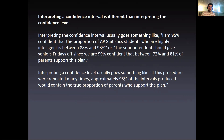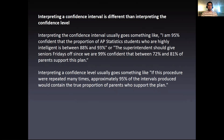Interpreting a confidence interval is different from interpreting the confidence level. Interpreting the confidence interval usually goes: 'I'm 95% confident that the proportion of AP Statistics students who are highly intelligent is between 88% and 93%.' Interpreting a confidence level goes something more like: 'If this procedure were repeated many times, approximately 95% of the intervals produced would contain the true proportion of parents who support the plan.' Make sure you understand the distinction between interpreting a confidence interval versus a confidence level.